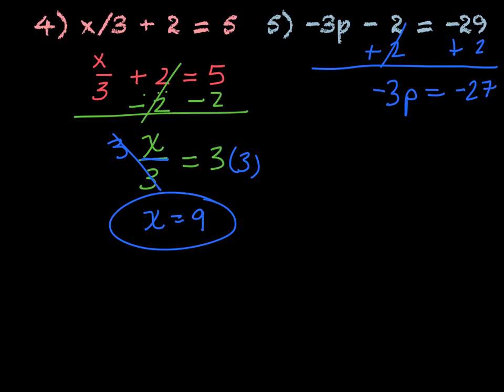Next, divide to get rid of the multiplication. Divide both sides by negative 3. Again, we have a double negative, which changes to positive. So p equals positive 27 divided by 3, which is 9. That's your final answer.